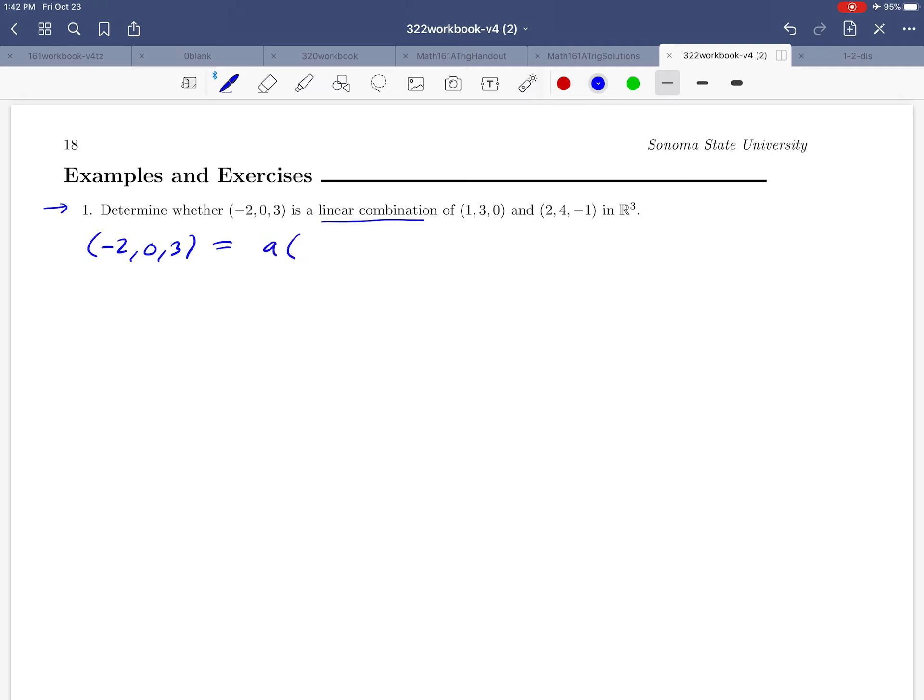So let's start with what that means. That's like asking us, can we take the vector (-2, 0, 3) and build it as a linear combination of the other two vectors? And by building it, we mean, can we come up with coefficients so that this sum, a times (1, 3, 0) plus b times (2, 4, -1) adds up to give us the (-2, 0, 3). So the question that we're asking is, do such an a and a b exist?